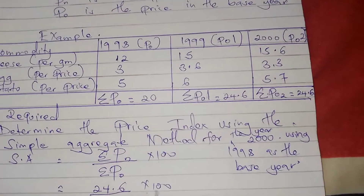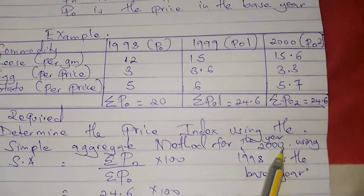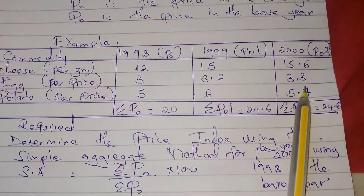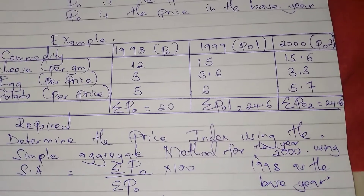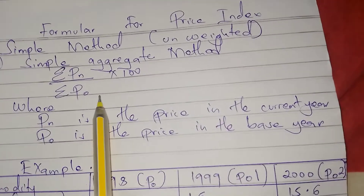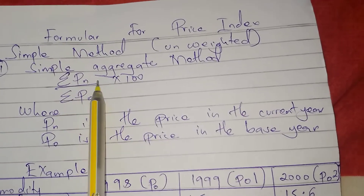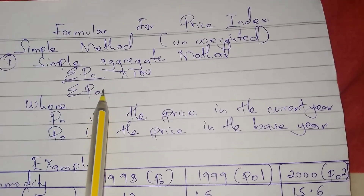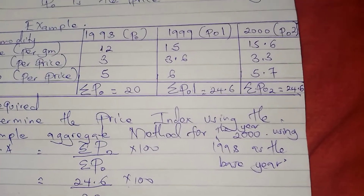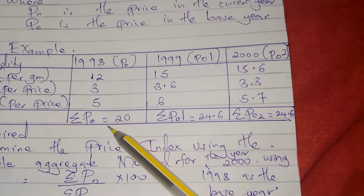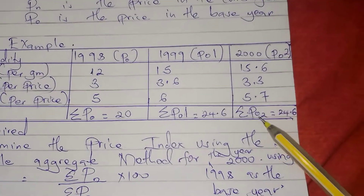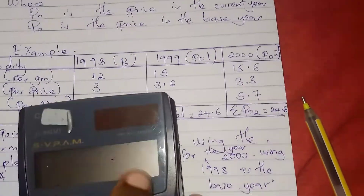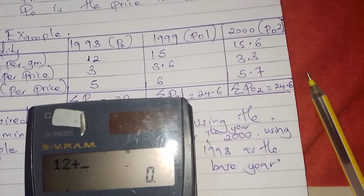They want us to determine the price index using the simple aggregate method for the year 2000, using 1998 as the base year. In this question we need the current year and the base year. They have given us the prices in 1998 and the prices in 2000. The formula is summation Pn divided by summation P-naught, where Pn is prices for the current year and P-naught is prices for the base year. So we add the base year prices: 12 plus 3 plus 5.